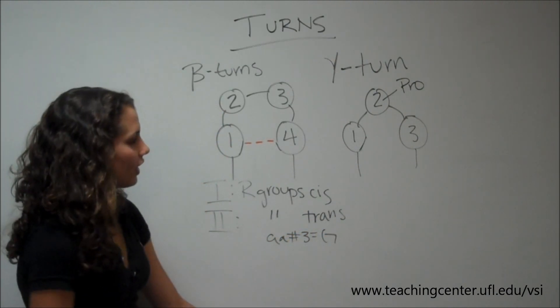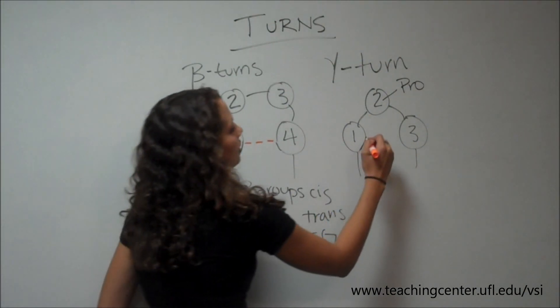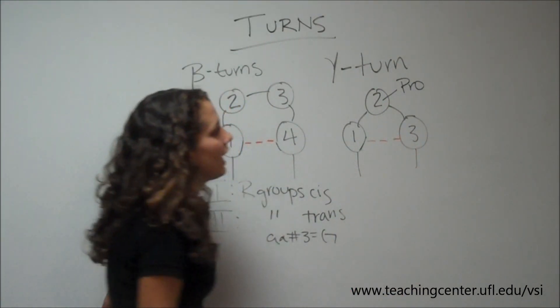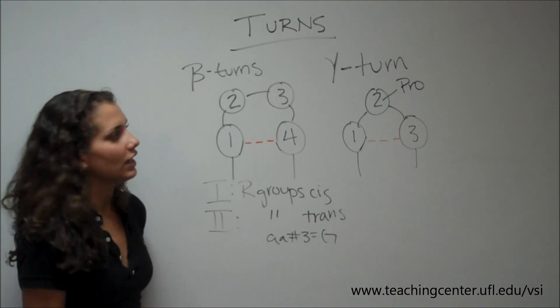In gamma turns, there are 3 residues in a 180 degree turn, and the first and the third residue are hydrogen bonded to each other. And due to the structure of gamma turns, the second amino acid is always proline.